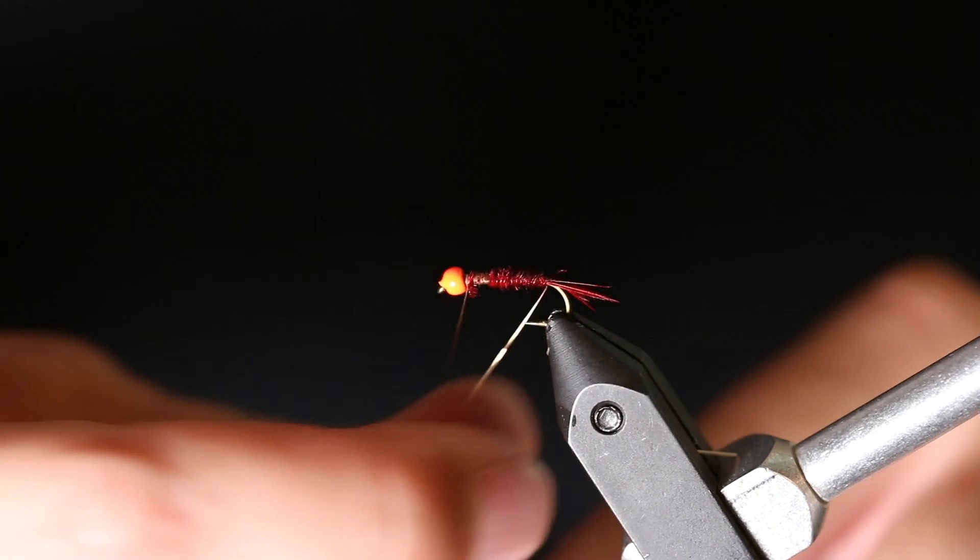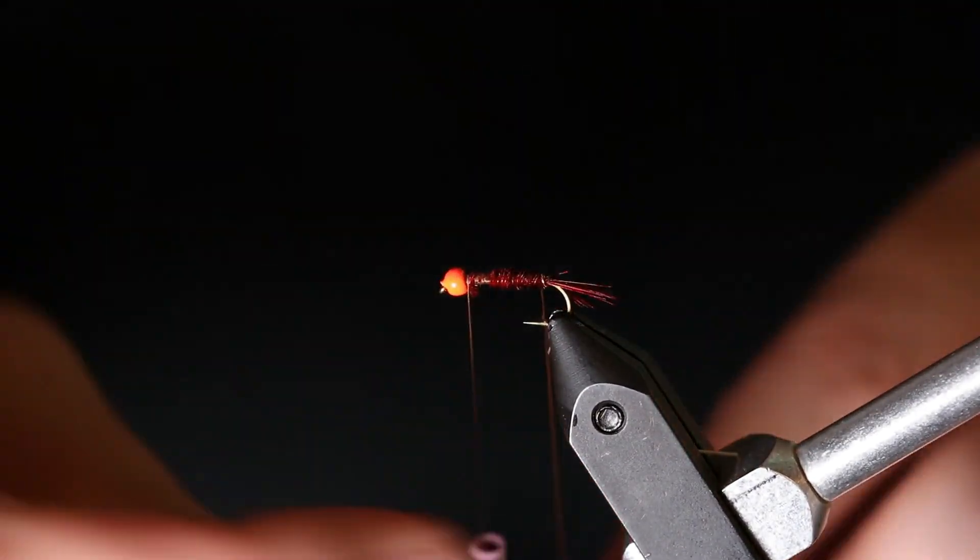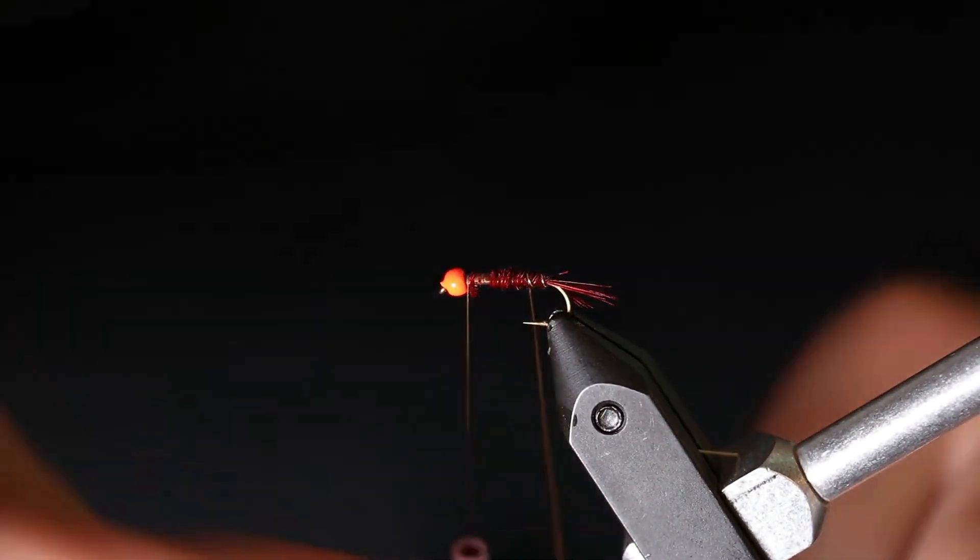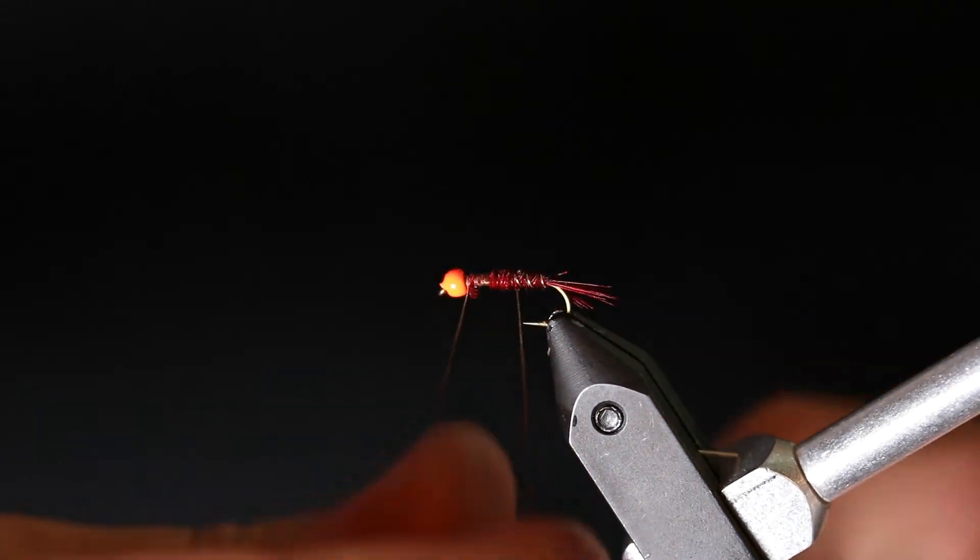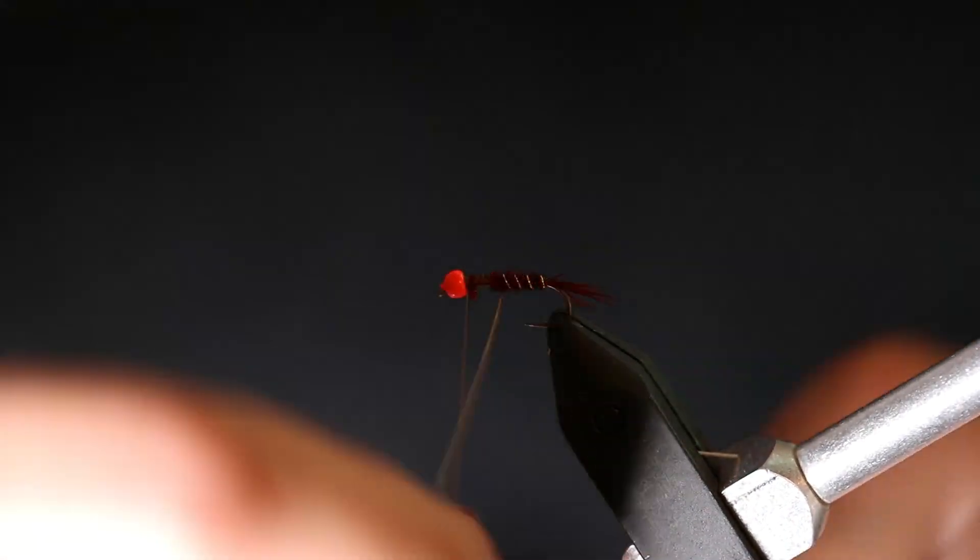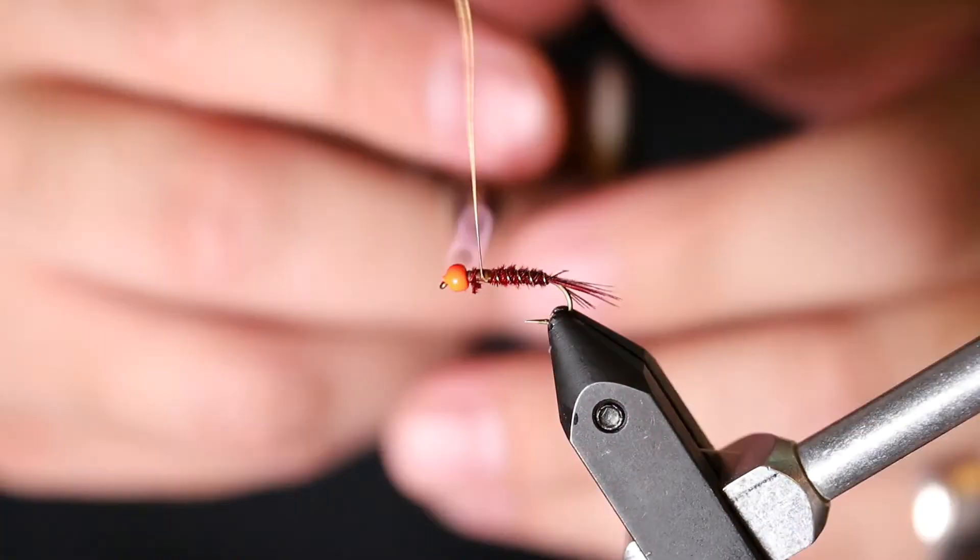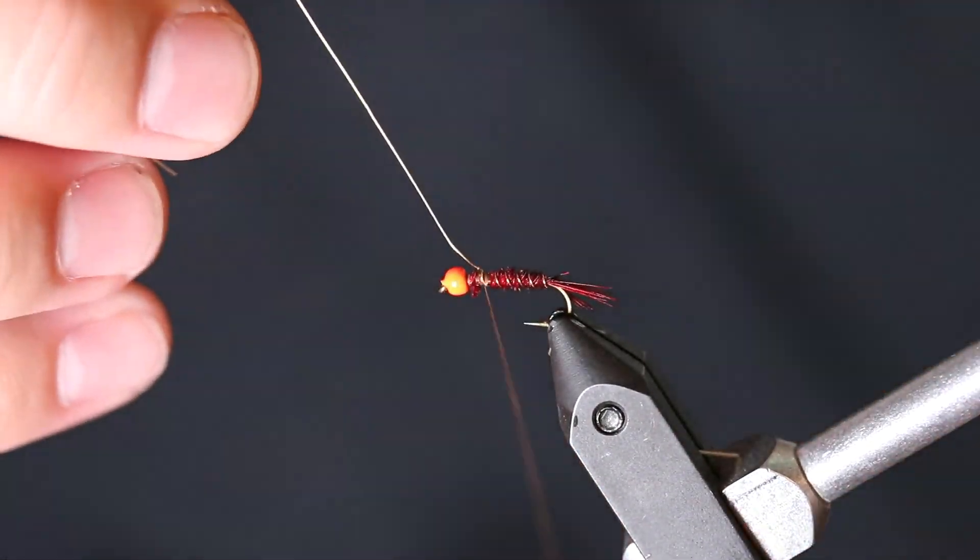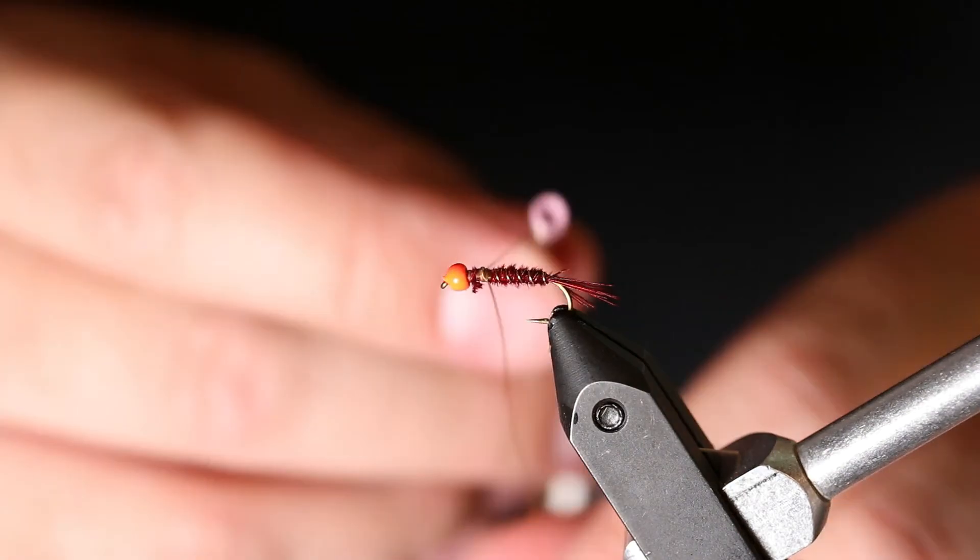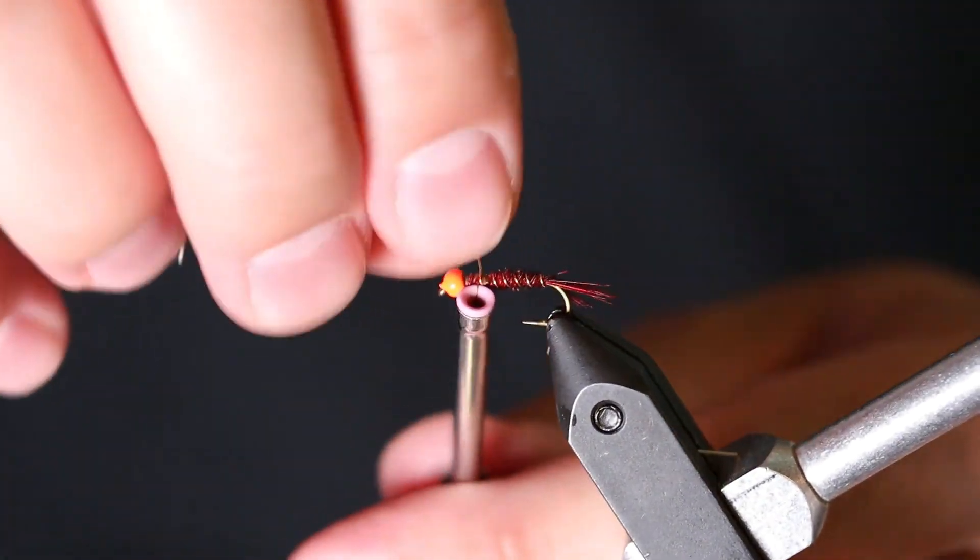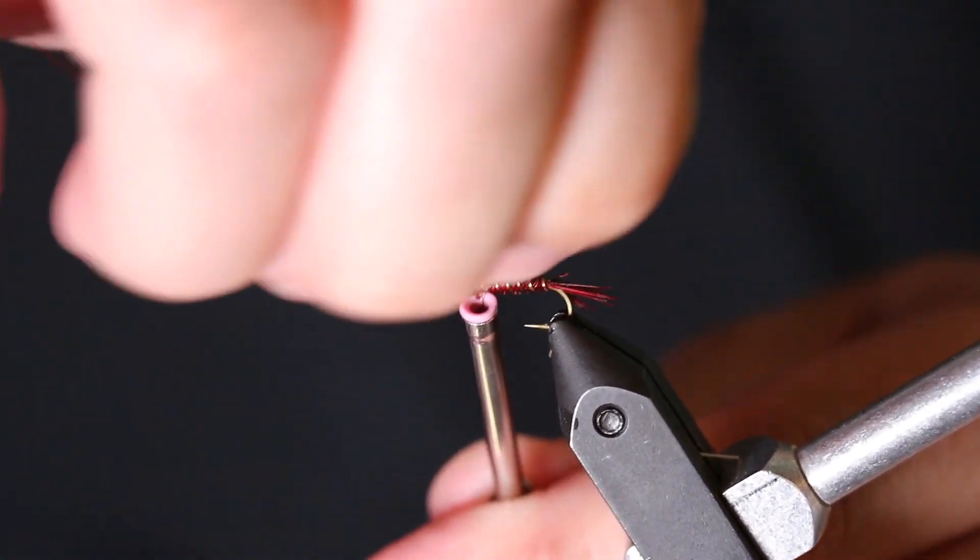And now you are going to counter wrap your gold wire up the shank of the hook, and just go ahead and helicopter that off.